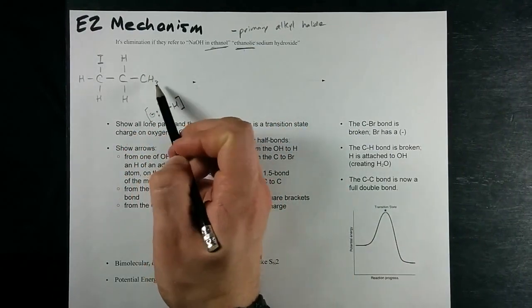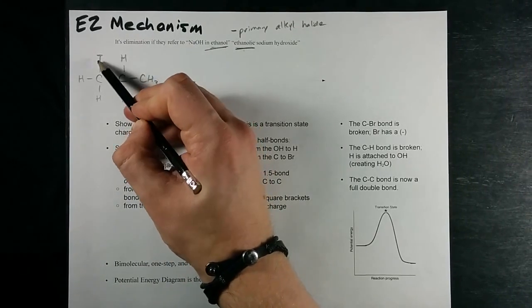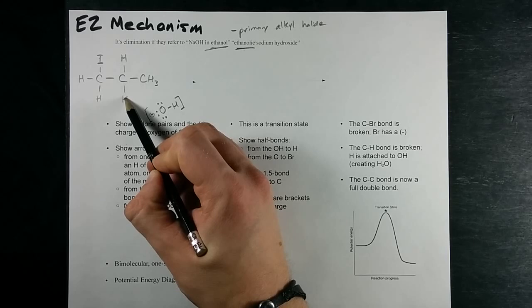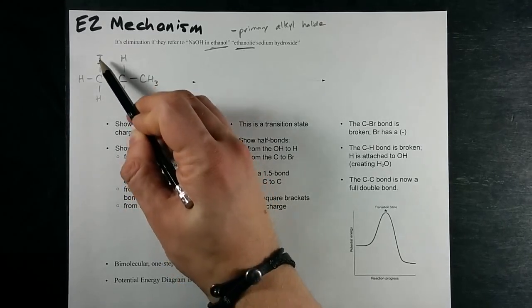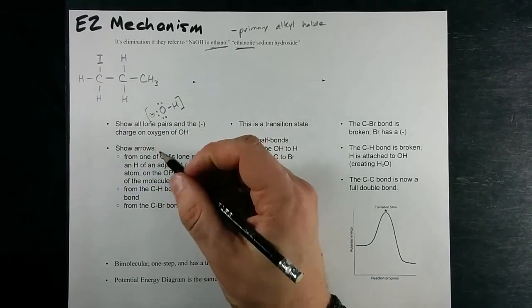So here's my primary alkyl halide. I've got one iodo propane here. My iodine is going to be removed and I have the hydrogen that I'm also removing on the opposite side of the molecule. That's important for the way that the electrons flow.